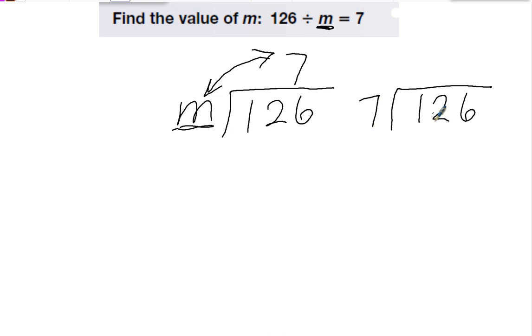So 7 goes into 12 one time. 12 minus 7 is 5. Bring down the 6. 7 goes into 56 eight times. That's 56.